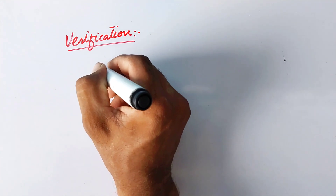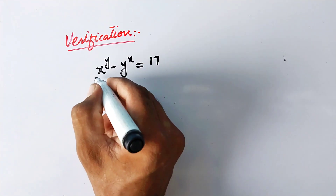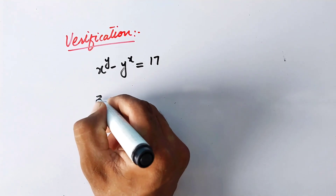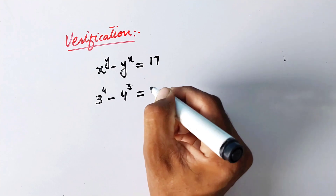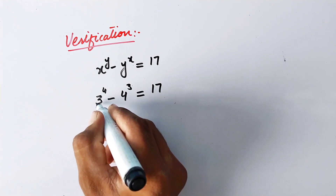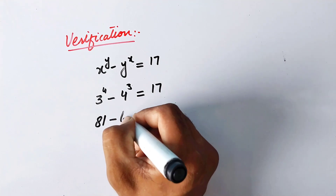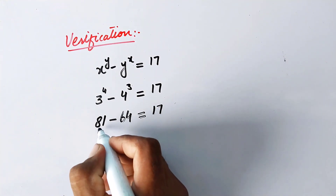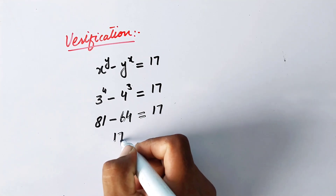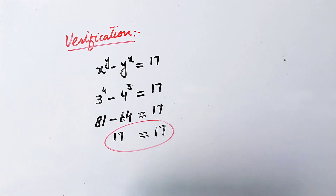Let's verify by substituting into the original equation x^y − y^x = 17. With x = 3 and y = 4: 3^4 = 81 and 4^3 = 64, so 81 − 64 = 17, which equals 17. Both sides match, confirming that x = 3 and y = 4 are correct.